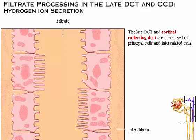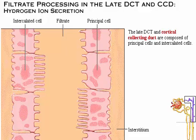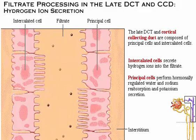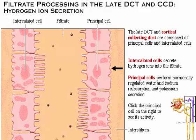The epithelium of the late distal convoluted tubule and the collecting ducts consists of two cell types: principal cells and intercalated cells. Each plays a different role in the final processing of filtrate. The intercalated cells help to balance the blood pH by secreting hydrogen ions into the filtrate through ATPase pumps in the luminal membrane. In contrast, the principal cells perform hormonally regulated water and sodium reabsorption and potassium secretion.